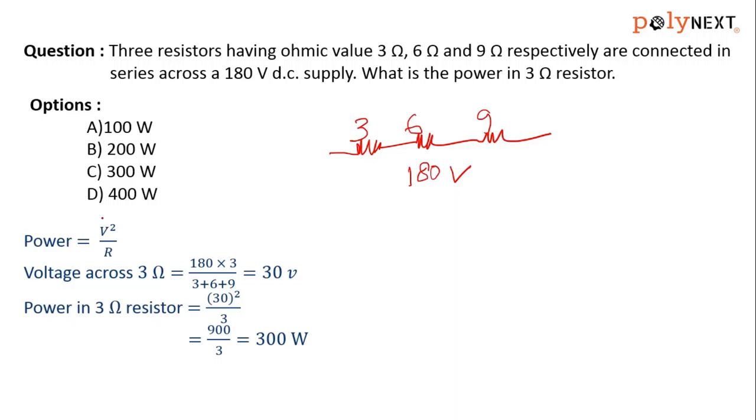Keep in mind power equals V squared by R. We need to find the voltage across 3 ohms. The formula uses the potential division rule.